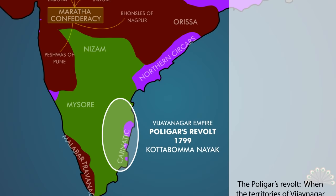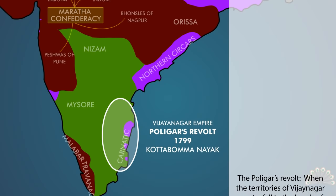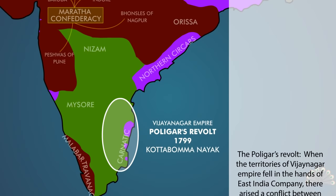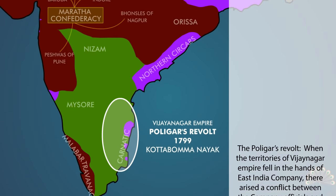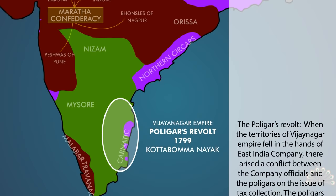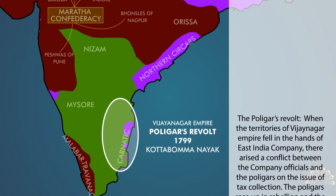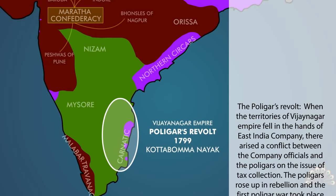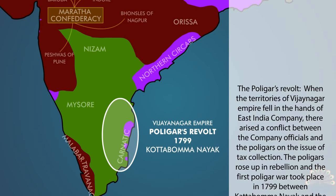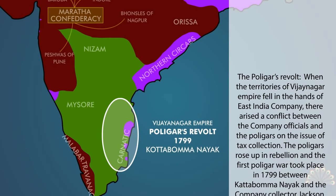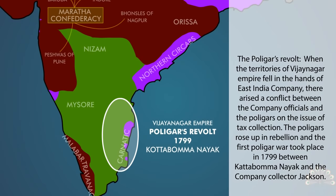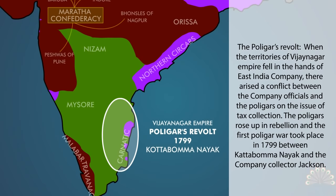The Polygars Revolt: When the territories of the Vijayanagar Empire fell into the hands of the East India Company, there arose a conflict between the company officials and the Polygars on the issue of tax collection. The Polygars rose up in rebellion and the First Polygar War took place in 1799 between Kattabomma Nayak and the company collector Jackson.